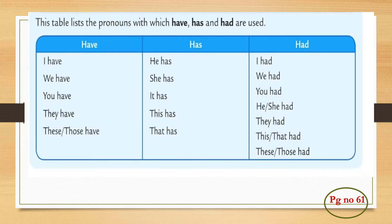Now let's read about the difference between has, have and had in more detail. This is the table that summarizes everything. With I, we, you, they, these and those, we will use have in the present tense. With he, she, it, this and that, we are going to use has in the present tense. And had is used with all the pronouns but in the past tense.